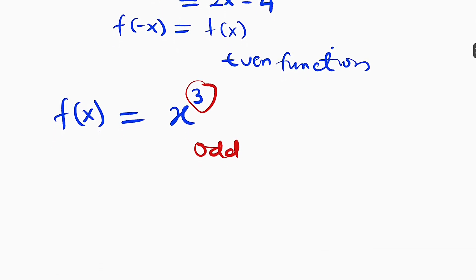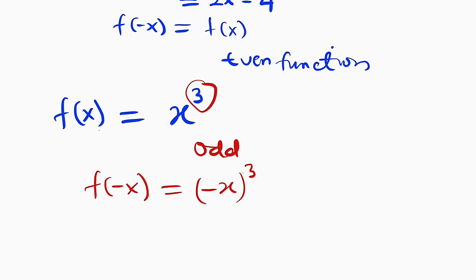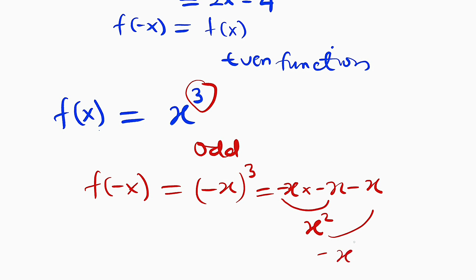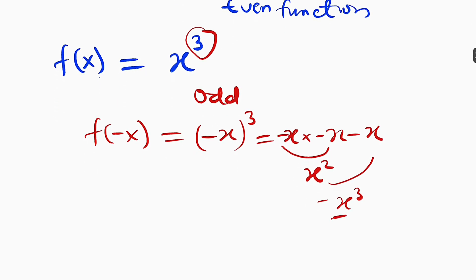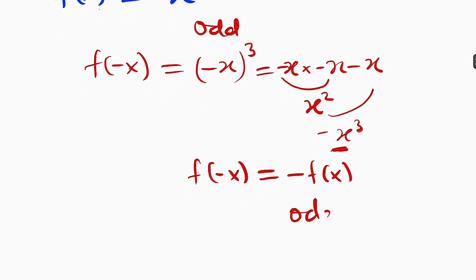Secondly, we can find out by substituting x with negative x. If x is negative, we have negative x to the power of 3. Remember that this is the same thing as negative x multiplied by negative x multiplied by negative x. Negative x times negative x times negative x gives us negative x to the power of 3. You can see what differentiates this function from the original function is the negative sign. So this is the same thing as negative the original function, which is f of x. So f of negative x is exactly equal to negative f of x, and hence we say that this is an odd function.